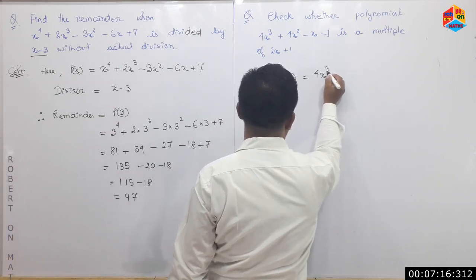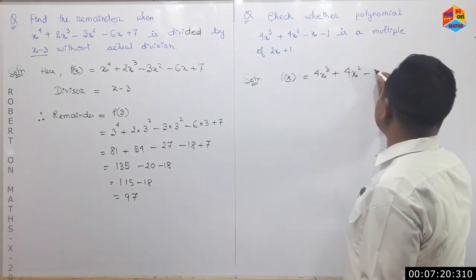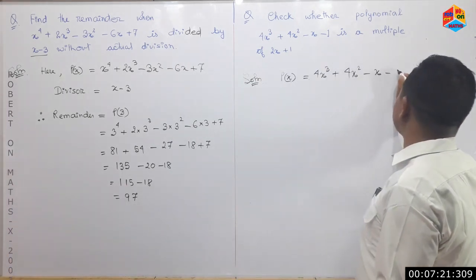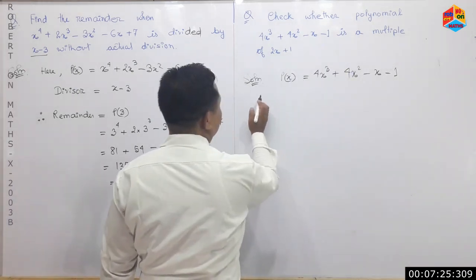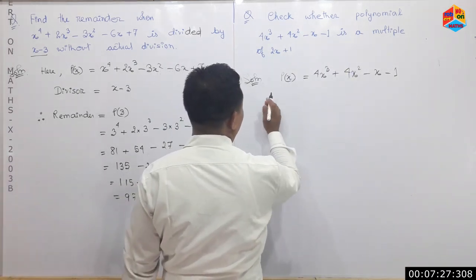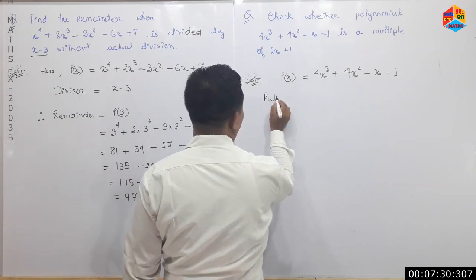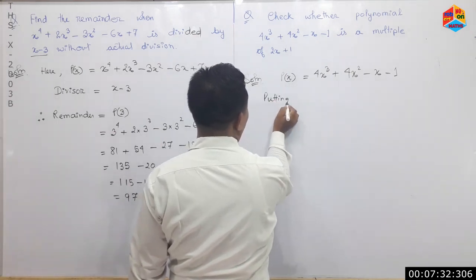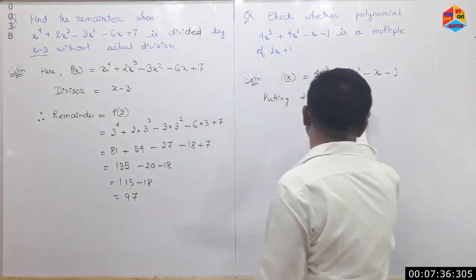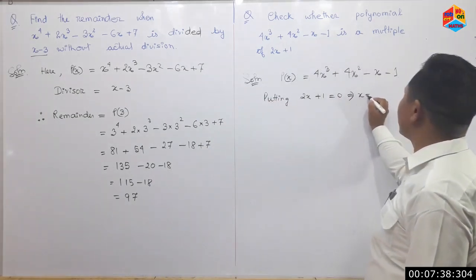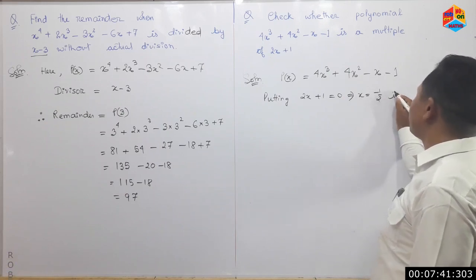P of x is 4x cubed plus 4x squared minus x minus 1. The divisor is 2x plus 1, set equal to 0, which implies x equal to minus 1 by 2 in P(x).